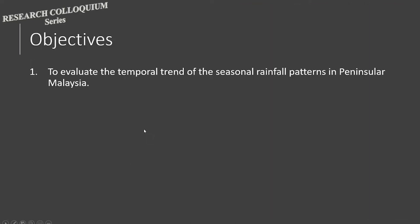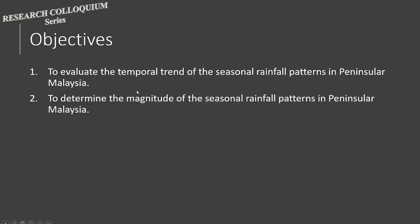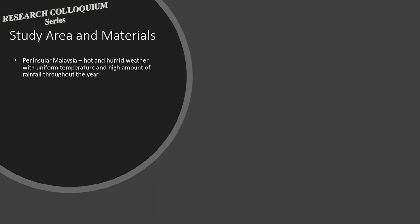This study aims to evaluate the temporal trend and the magnitude of seasonal rainfall patterns in Peninsular Malaysia. Since the study is located in Peninsular Malaysia, we need to understand the geographic characteristics of this country as well as its climate. Peninsular Malaysia is a tropical country which experiences hot and humid weather with uniform temperature and high rainfall throughout the year.